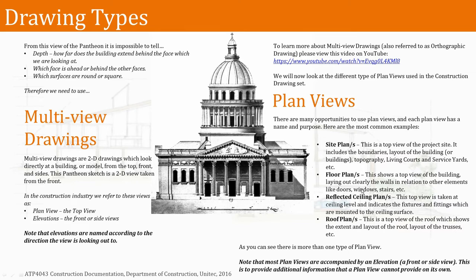What types of plan view do we use in the construction industry? First, there are site plans, which give us the boundaries, the layout of the building, topography, living courts, and service yards. Floor plans show where the walls are located in relation to elements like doors, windows, stairs, and other features. There's also the reflected ceiling plan, which is a view of the ceiling showing fixtures and fittings mounted on the ceiling surface. And then there are roof plans, which give us the extent and layout of the roof and the layout of the trusses.